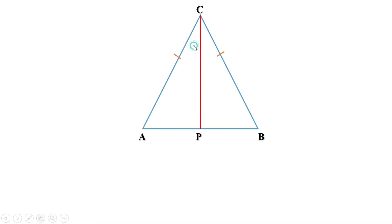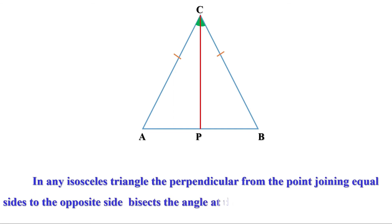In the same way, these two angles are also equal — this line divides angle C into two equal parts. Therefore CP is the bisector of angle C also. That means, when we draw a perpendicular from this point to the opposite side, it is the bisector of this angle and the opposite side. So in any isosceles triangle, the perpendicular from the point joining equal sides to the opposite side bisects the angle at this point and the side opposite.